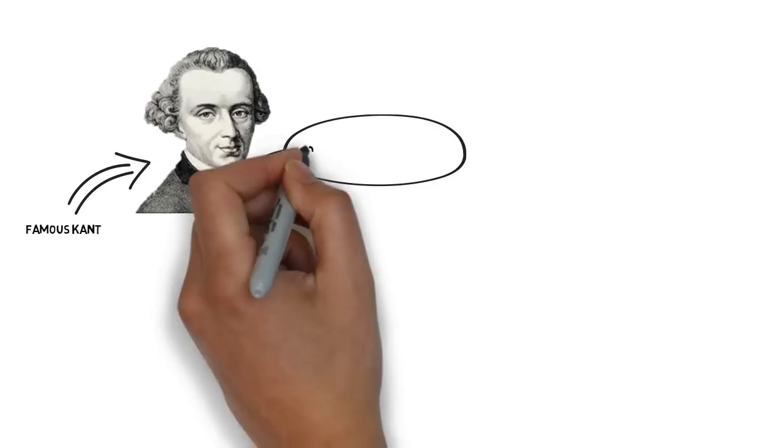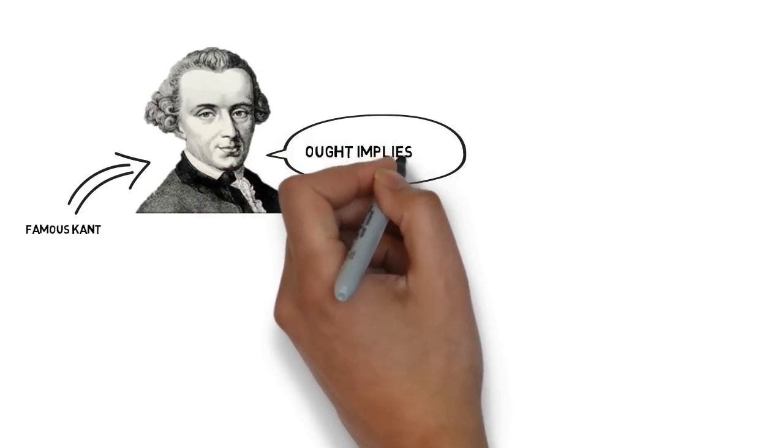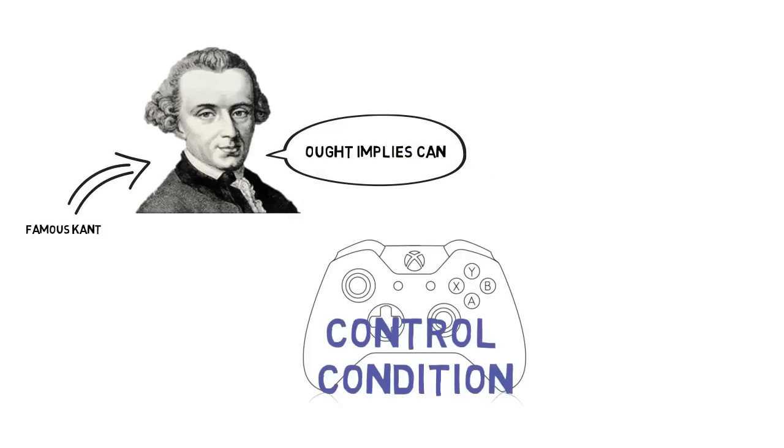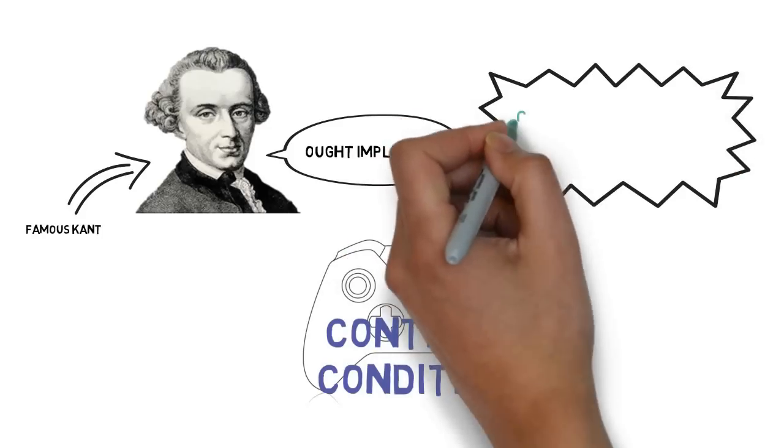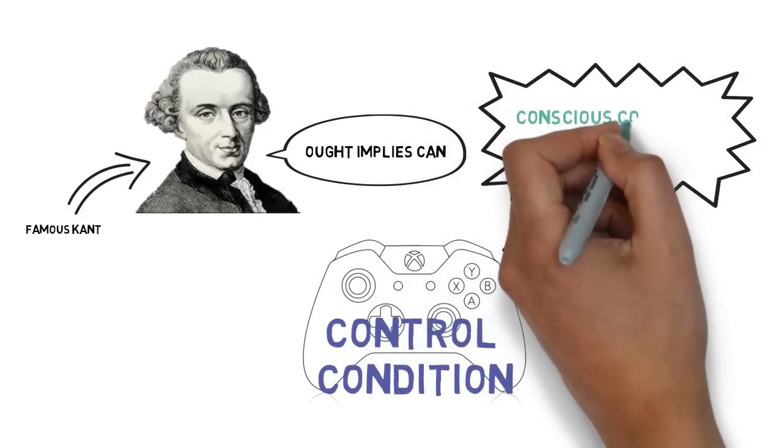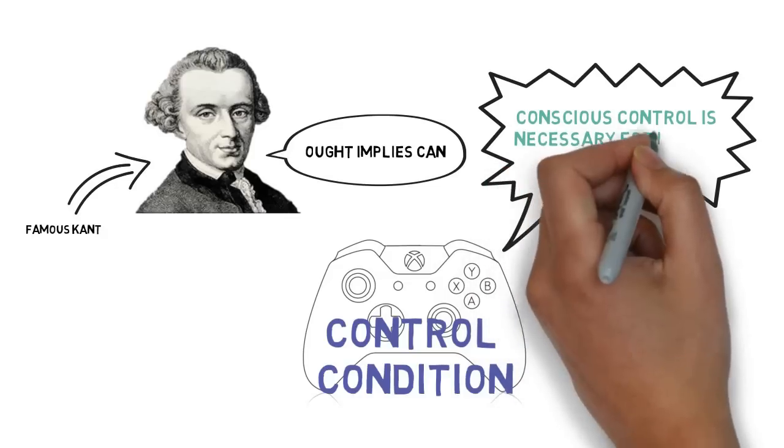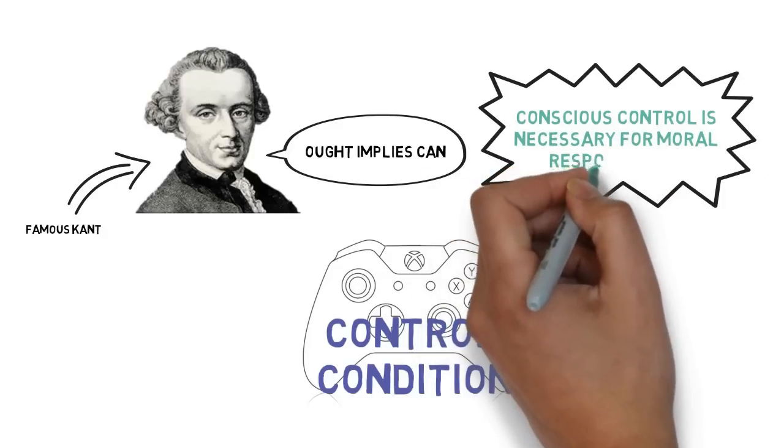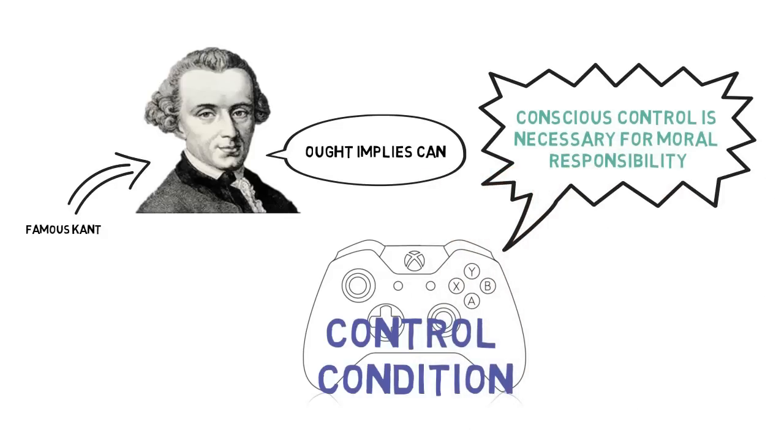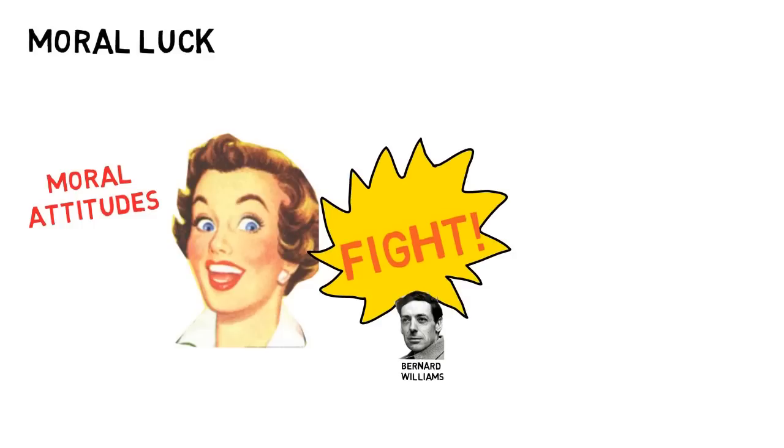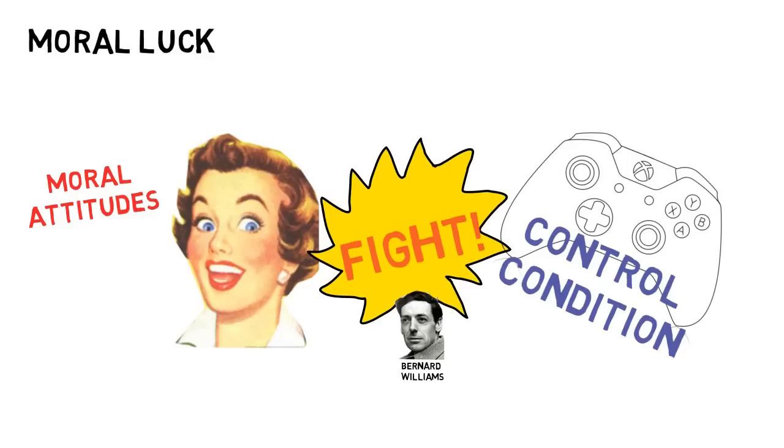Kant famously claimed that ought implies can. From this claim one can deduce the so-called control condition, basically a claim that conscious control is necessary for moral responsibility, and that people can only be reasonably praised or blamed for something they do when they could have chosen to do otherwise. Moral luck is when our natural moral attitudes conflict with the control condition. There are three ways in which this can happen.